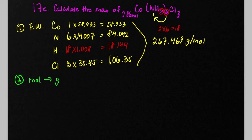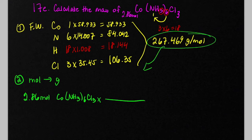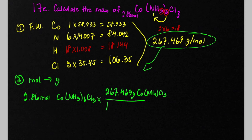Step 2, we want to convert from moles to grams, and we're going to use dimensional analysis. Starting with 2.86 moles of this formula, we want to use this formula weight as our conversion factor. So we multiply by 267.469 grams divided by 1 mole of this formula.